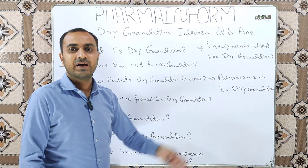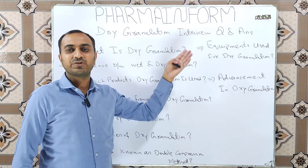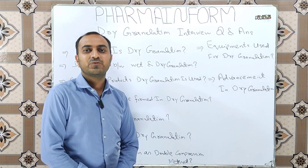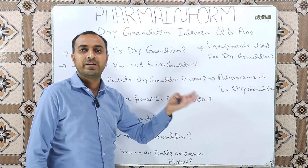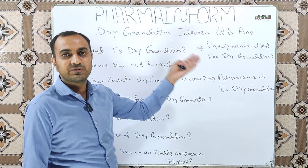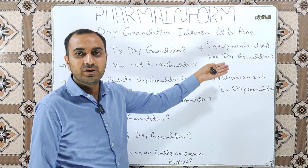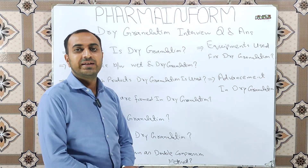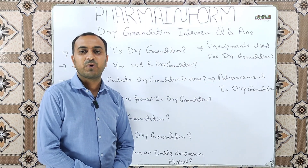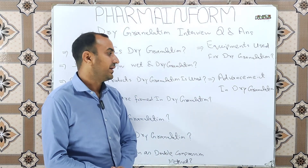The next question is: which equipment is used in the dry granulation method? The equipment includes an oscillating granulator or Russell shifter for sieving, a bin blender or double cone blender for mixing, a compression machine for the slugging method, a roller compactor or chilsonator for compressing powder into powder sheets, an oscillating granulator or cutting mill for screening slugs or powder sheets, and a double cone blender for final blending.